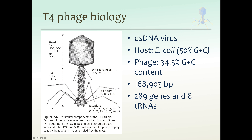It is a tailed phage belonging to myoviridae. So it has the icosahedral head, but instead of having a long, flexible tail, it has a shorter, wider tail that looks more like a syringe needle. This wider tail has a base and also these long tail fibers that look more like lunar landing gear.